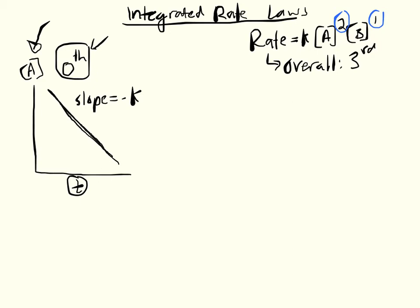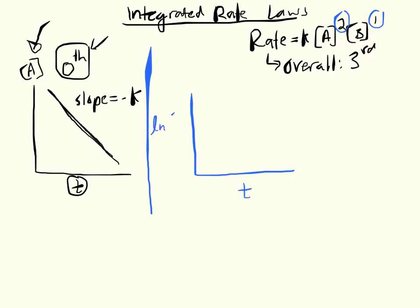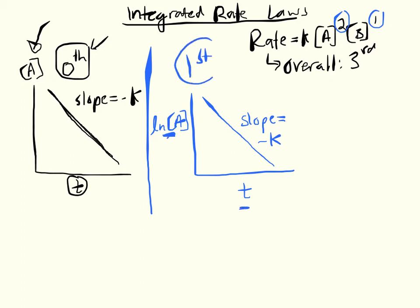On the other hand, if we make a graph of the natural log of the concentration of A versus time and get a straight line, the slope of that line equals negative K. When we plot ln[A] versus time and get a straight line, it tells us the reaction is first order with respect to that reactant.